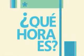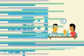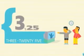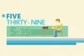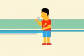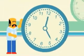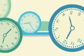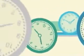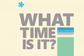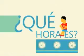What time is it? What time is it? 5.15. 8 o'clock. What time is it? 3.25, 5.39. I want to show you how to tell the time, then we will learn how to tell the time. What time is it? 7.45, 12 o'clock.